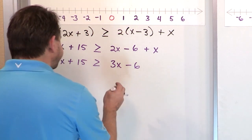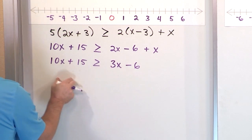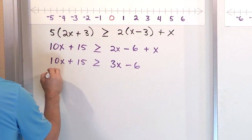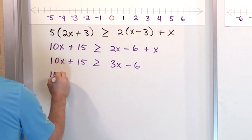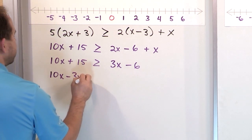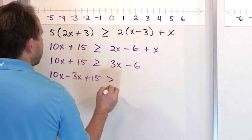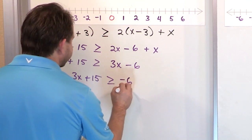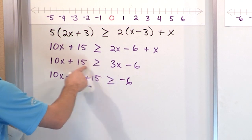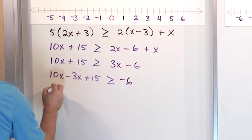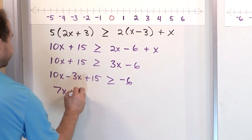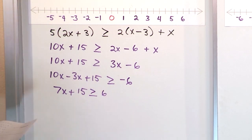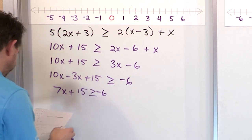Now we need to take this 3x and move it to the left side, and take the 15 and move it to the right. We subtract 3x from both sides, so we have 10x minus 3x plus 15 on the left, and negative 6 on the right. So 10 minus 3 is 7x plus 15, greater than or equal to negative 6.